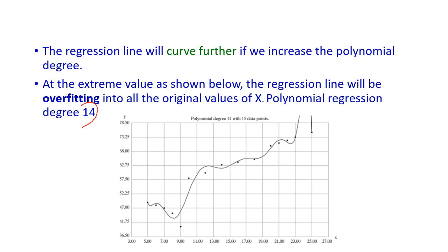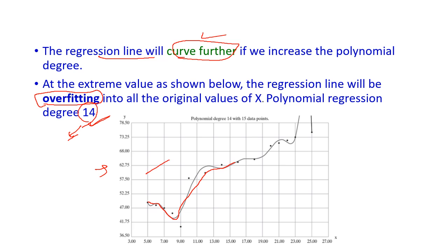If the regression degree gets increased, the regression line curves further. If we increase the degree to 14, the curve will look highly fitted, which causes the overfitting problem. Hence, the degree should be selected properly. If the degree is very less, it becomes a simple linear regression model — that is underfitting. If we increase it too much, overfitting occurs. So we must properly select the degree of polynomial.